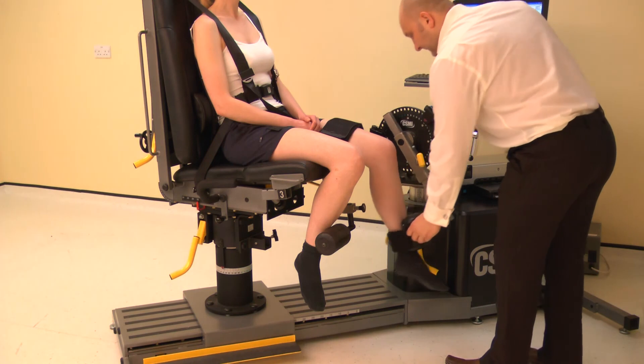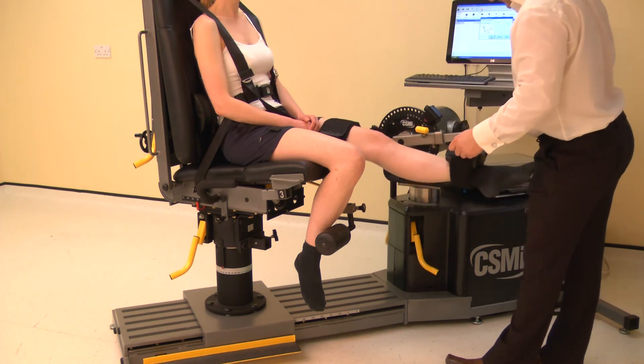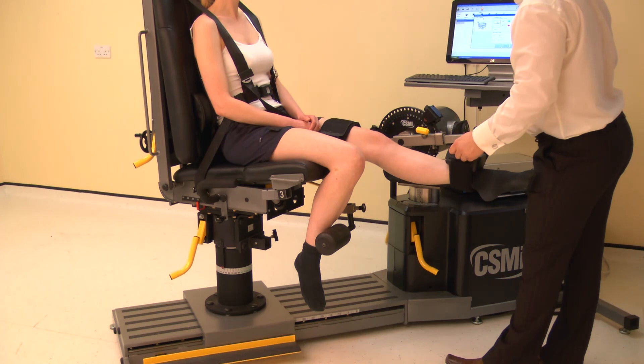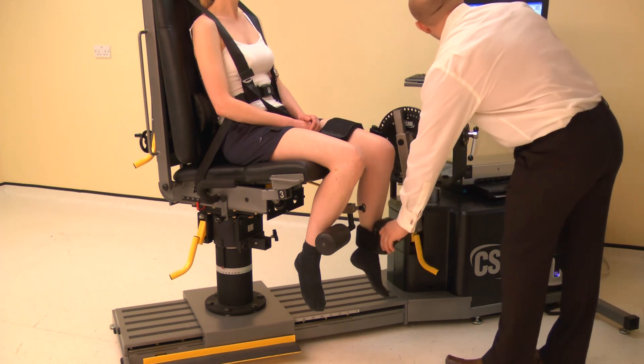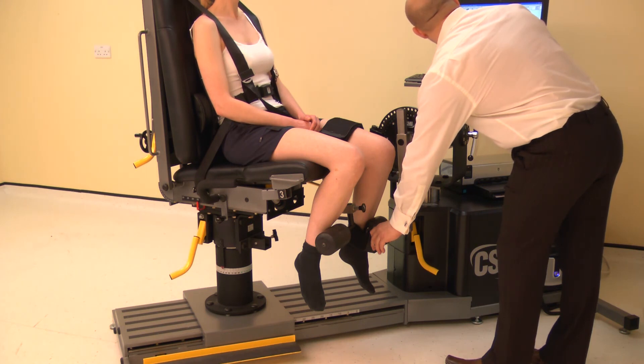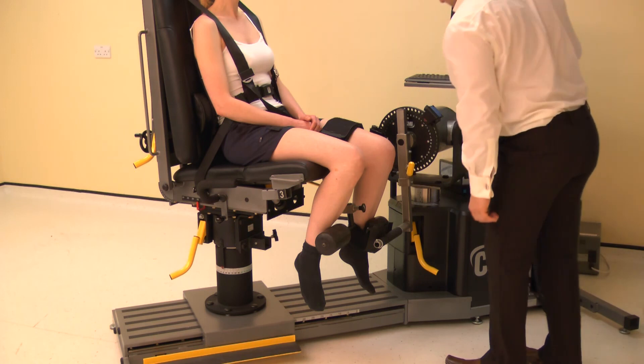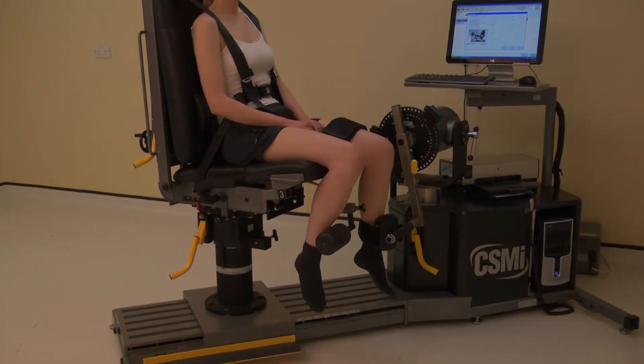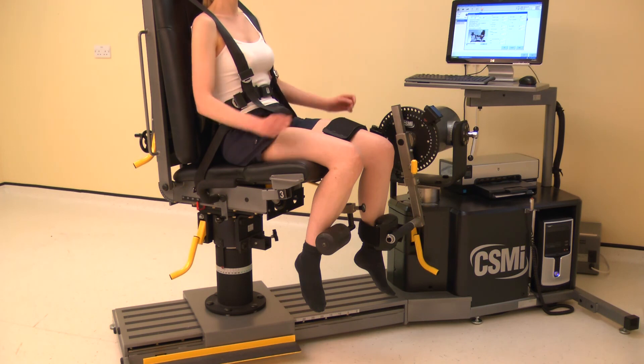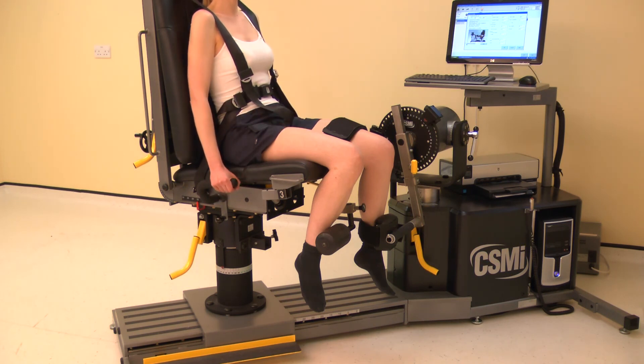To check the axis of rotation and the position of the pads, hold the calf pad next to the shin. Then extend and flex the knee manually. If the pad rubs up and down the shin, the axis of rotation is wrong. Release the calf pad and reset the axis of rotation. During the movement the subject should be encouraged to hold the fitted handles, as this has been shown to optimize results.